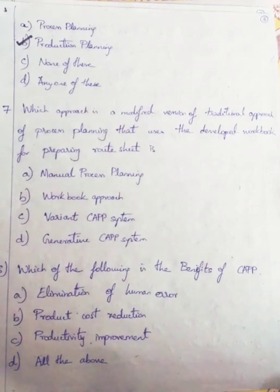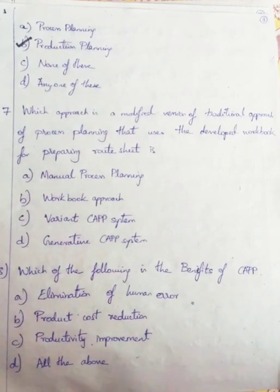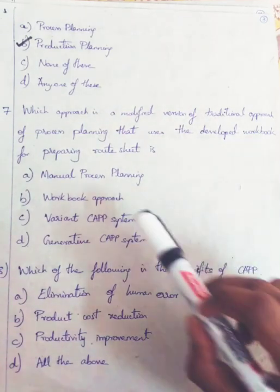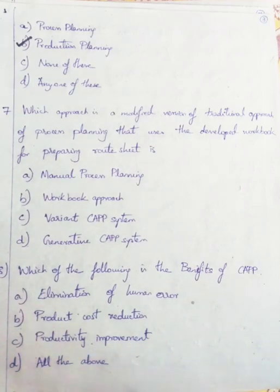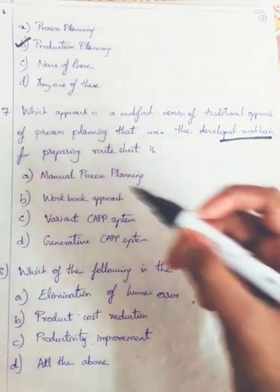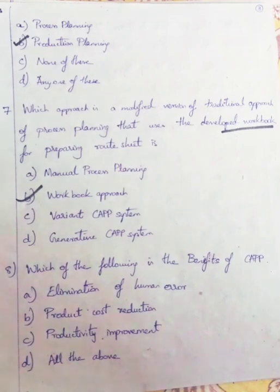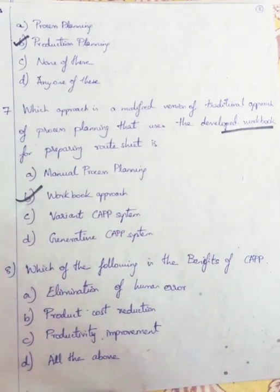Question 7: Which approach is a modified version of the traditional approach of process planning that uses a developed workbook for making a route sheet? Both the traditional approach and the workbook approach are manual process planning, so we eliminate CAPP options and go with Workbook Approach. Question 8: Benefits of CAPP include elimination of human error, production cost reduction, and productivity improvement. Using computer technology achieves all these, so we select All of these.